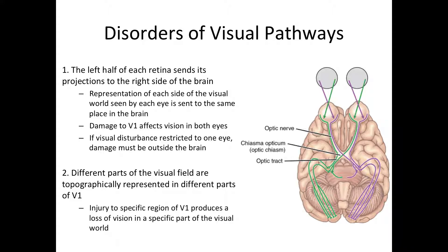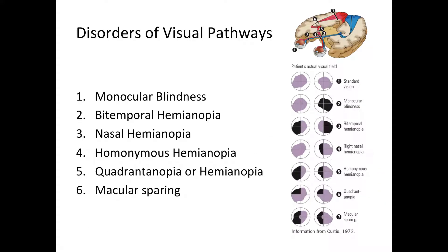Different parts of the visual field are topographically represented in different parts of area V1, so an injury to a specific region of V1 produces loss of vision in a very specific part of your visual world. Let's talk about what happens when damage is done to different places in the visual pathways. Number one in the image is standard vision, used as reference — someone without any lesions.